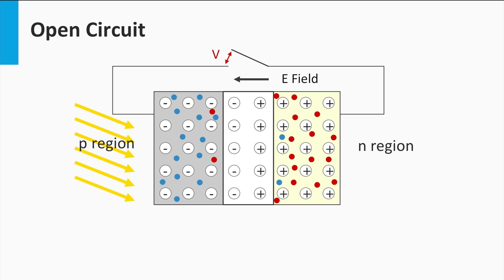However, no current is created when we open the electrical circuit. In that case, the dominant drift current of light-excited charge carriers will positively charge the p-region with holes and negatively charge the n-region with electrons. This charging creates an electric field opposite to the built-in electric field and reduces the net drift current again. This charging will build up until both drift currents are in equilibrium. The device then does not generate a current but builds up an electric field, or voltage. The voltage created by an illuminated solar cell under open-circuit conditions is called the open-circuit voltage.